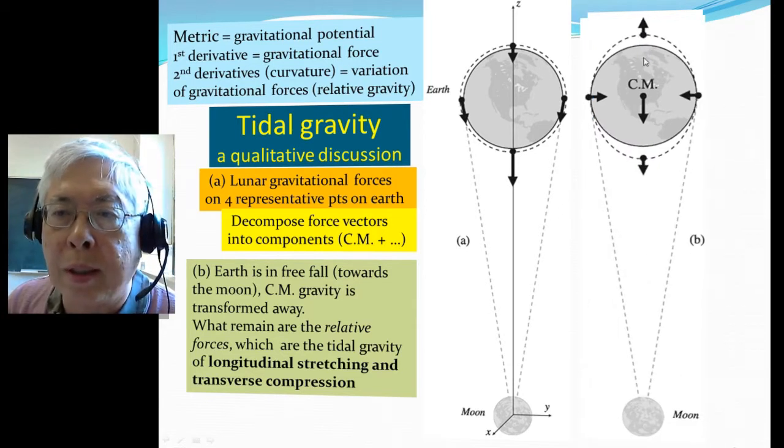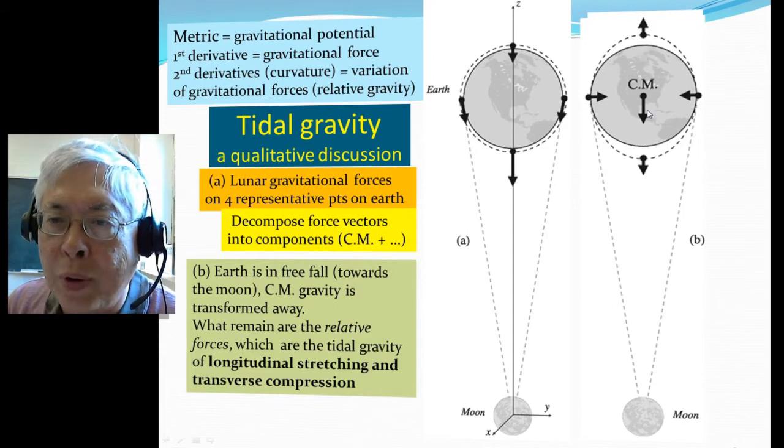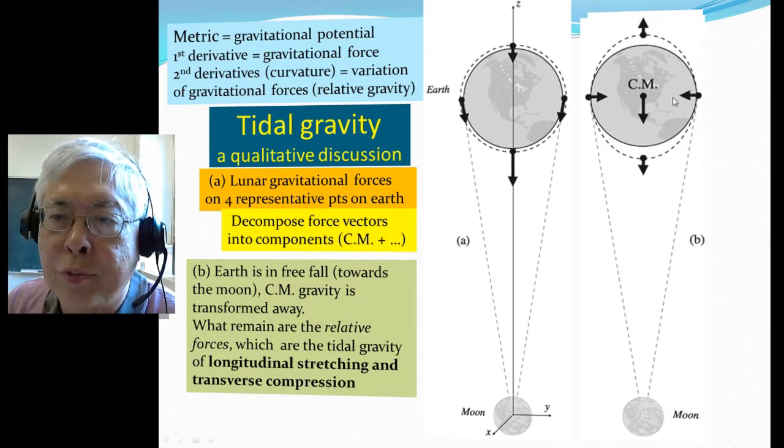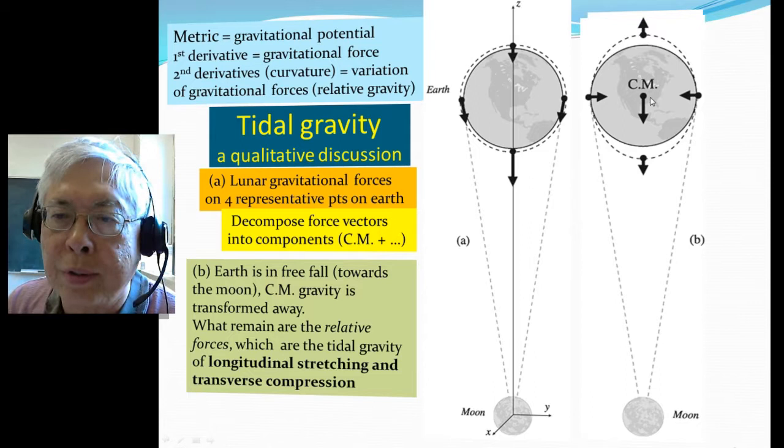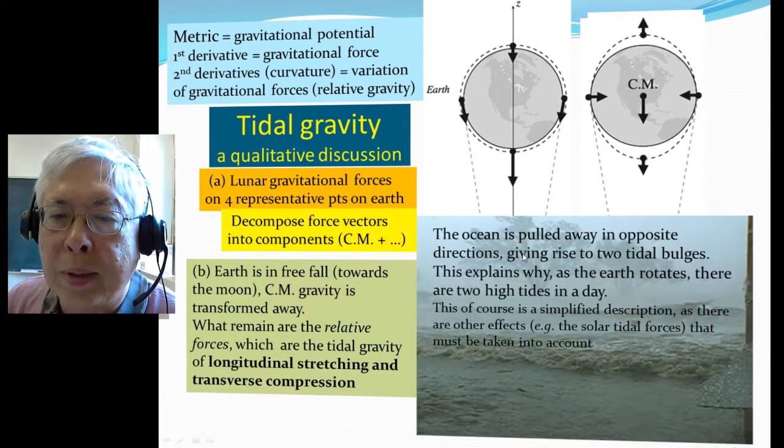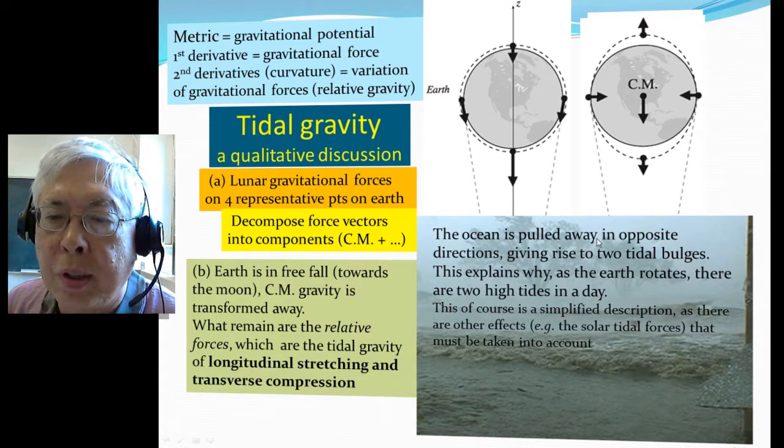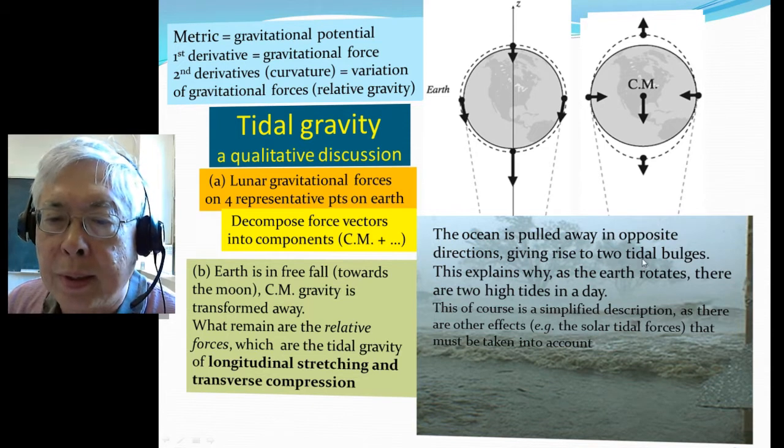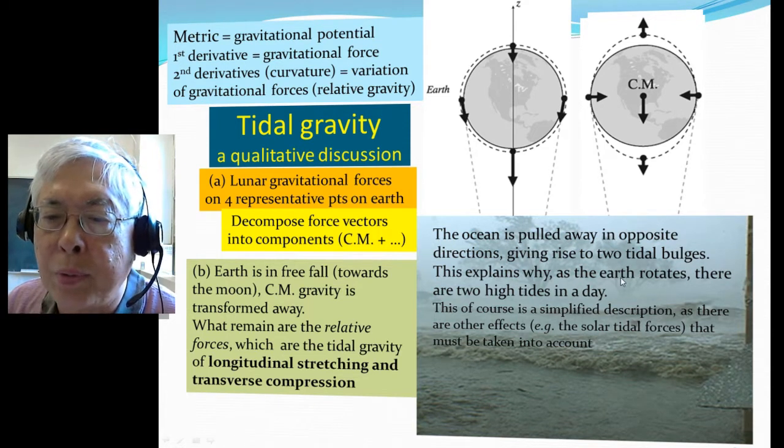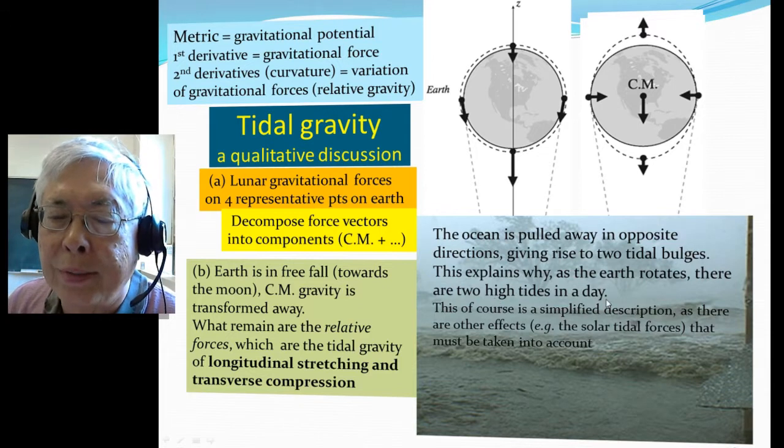Which is longitudinal stretching, because the force points away from the Earth and from the center, and transverse compression with force pointing towards the center. That's why the ocean, the water on the Earth will be pulled away in the opposite direction due to this longitudinal stretching, giving rise to tidal bulges. Okay, this explains why when the Earth rotates there will be two high tides per day.